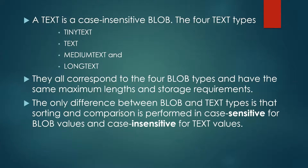Text is a case sensitive blob. There are four types in text: tiny text, text, medium text, and long text. They all correspond to the four blob types and have the same maximum length and storage requirements. The only difference between blob and text type is that sorting and comparison is performed case sensitively for blob values and case insensitively for text values.